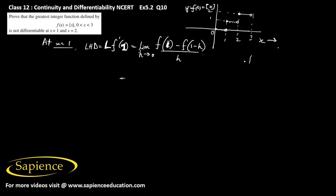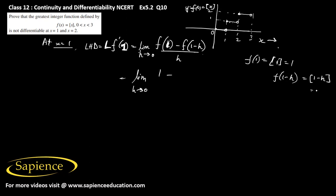Now f(1) = [1] = 1. And f(1 minus h): since 1 minus h is slightly less than 1, [1 minus h] = 0. So this becomes the limit as h tends to 0 of (1 minus 0) divided by h, which is 1/h — and that is not defined.